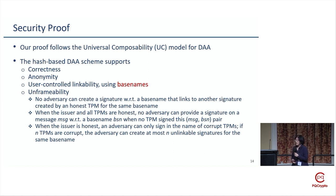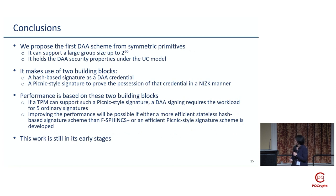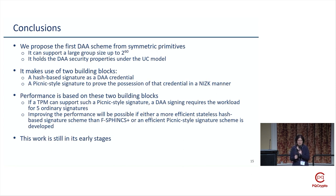To conclude: we proved our scheme using the UC model, and the proof indicates all DAA signature and privacy properties are preserved for this hash-based construction. We provided the first hash-based DAA signature with two building blocks: SPHINCS+-type signature used as the DAA credential, and picnic-style signature used for zero-knowledge proof. This work is still in an early stage as both building blocks are still in development, and we look forward to more efficient versions.